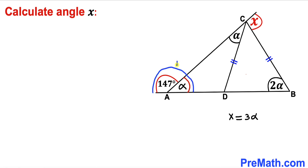Now let's focus on this straight angle, which is 180 degrees. We know that this is 147 degrees, so therefore this angle alpha is going to be 180 degrees minus 147 degrees, and that gives us 33 degrees.